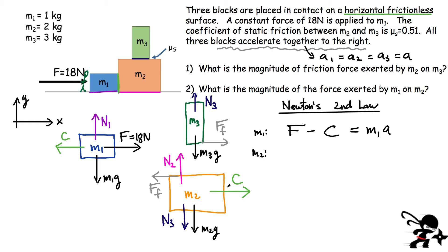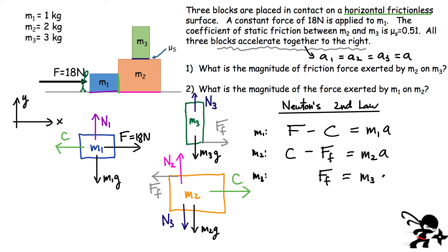For block M2, the horizontal forces give C minus the friction force equals M2 times A. For block M3 it's simple — there's only one force pointing right, which is the friction force: friction equals M3 times A. These are our three equations for Newton's second law. I could also write equations for the vertical direction, but in this case I have everything I need from the horizontal equations.